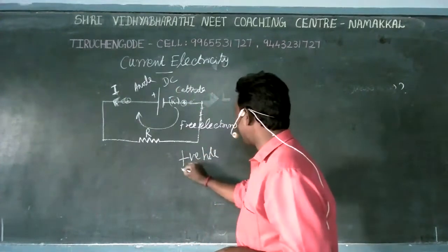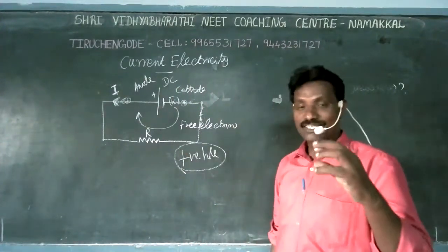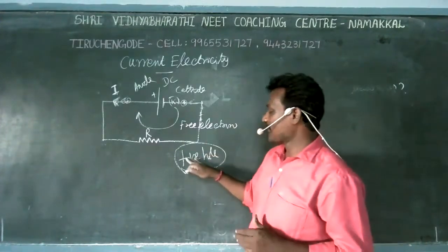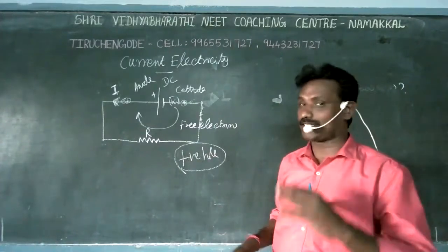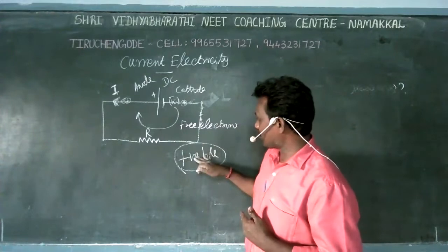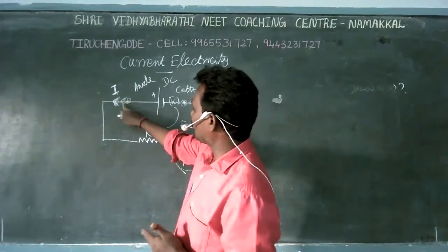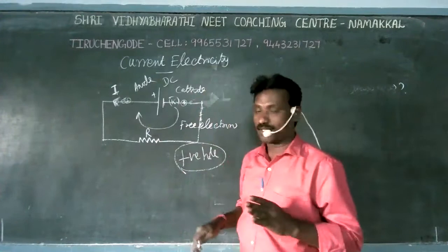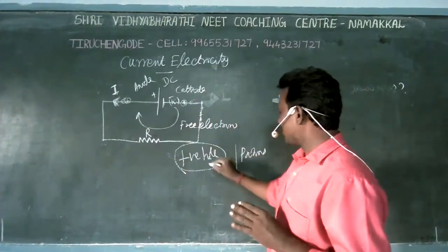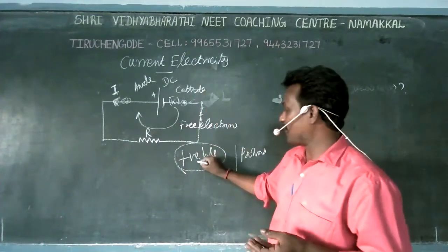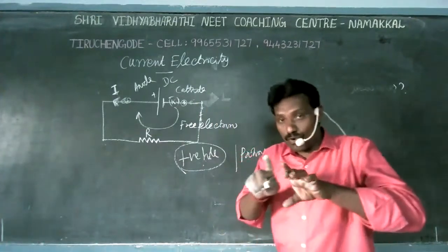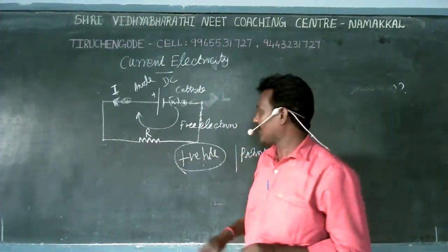This same concept of positive holes is used in extrinsic p-type semiconductors. In a p-type extrinsic semiconductor, positive holes are present. When the electron moves, a positive hole is produced — both are the same concept. However, positive holes and protons are twins, not the same. They are entirely different: a positive hole has a proton-like character but both are entirely different.